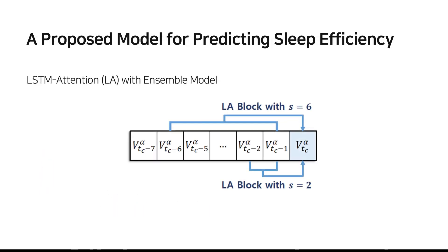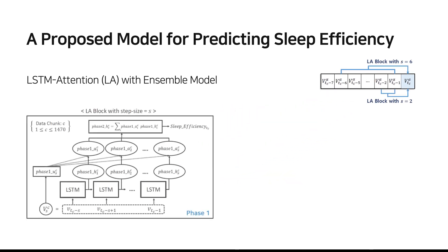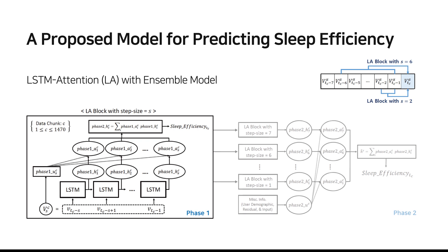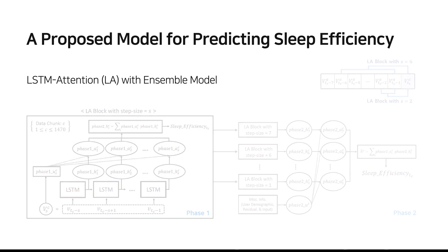We set up one LSTM attention block, also called LA block, to be composed of several different numbers of daily vectors. Our proposed model consists of two phases. Phase 1 is an LSTM attention model to predict and interpret sleep efficiency based on a given LA block. Phase 2 is an ensemble attention model to predict and interpret sleep efficiency based on hidden vectors derived by various LA blocks from Phase 1, as well as each subject's demographics.